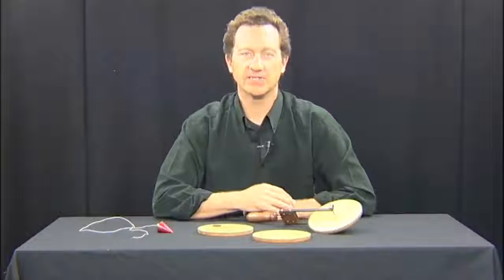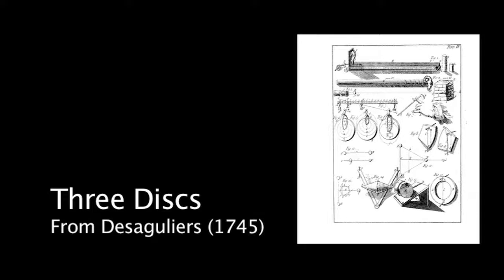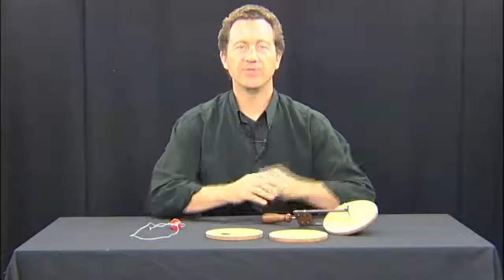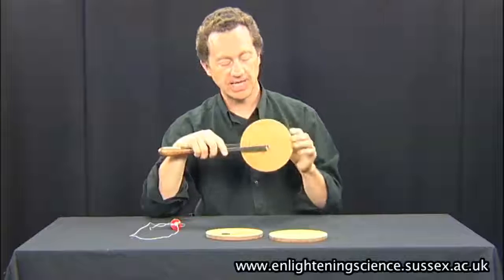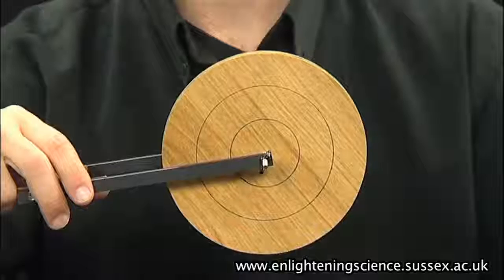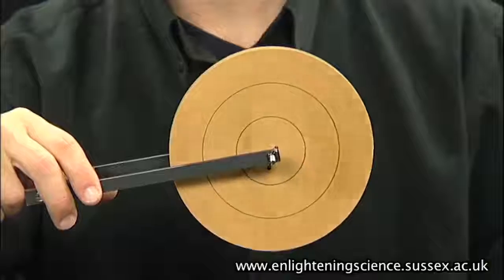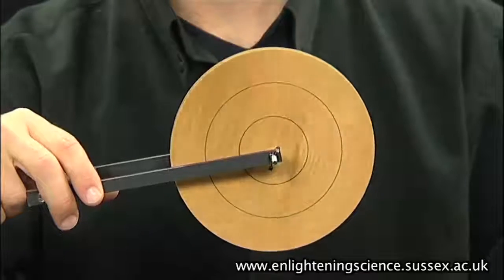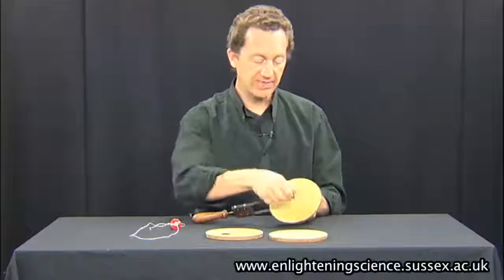This is an apparatus designed by Desiguliers to show the difference between centre of motion, centre of mass, or centre of gravity. We start with the simplest case: a circular disc on the calipers. Right at the centre of the disc, we've cut a hole and fixed it in place. When I spin it, it spins beautifully and doesn't wobble. So the centre of motion here is obviously at the centre of weight of the disc.